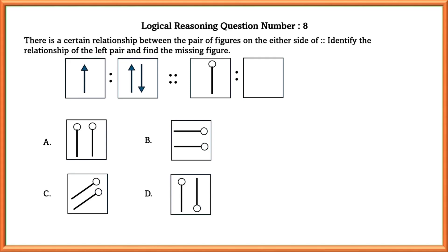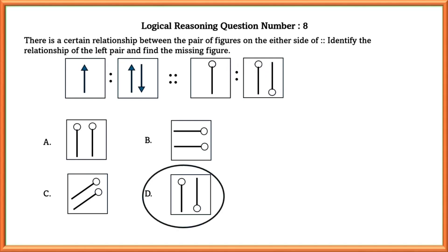Logical reasoning question number eight: identify the relationship of the left pair and find the missing figure. In the first relationship, the first arrow is pointing northwards and the second arrow is pointing south, meaning the figure has turned 180 degrees. So similarly, in the second relation, turning 180 degrees gives us option D.